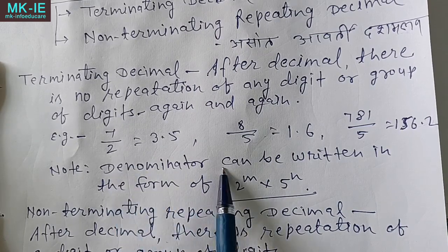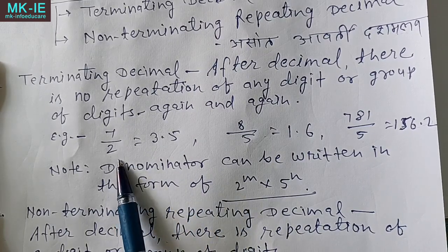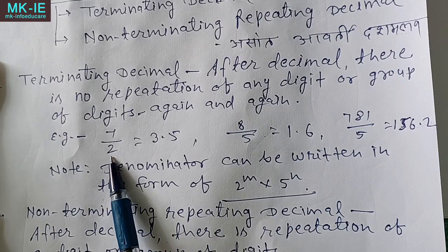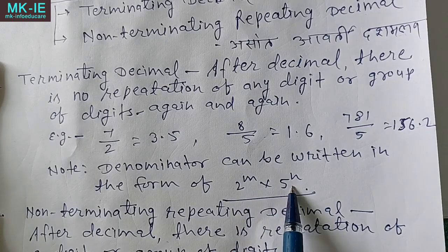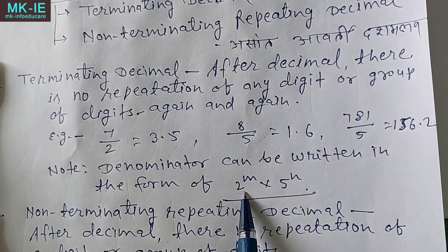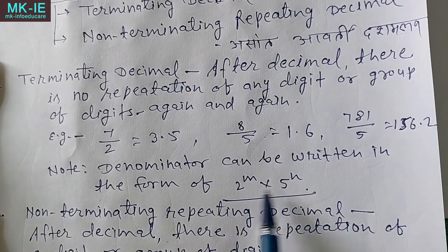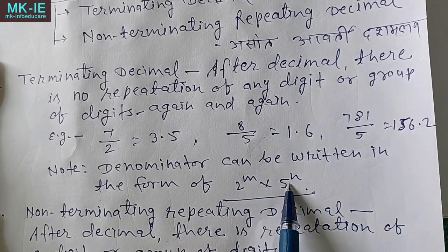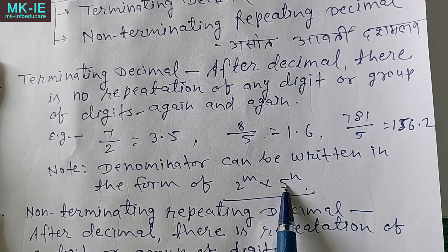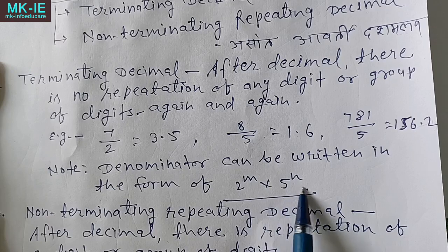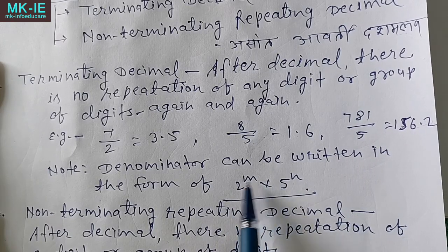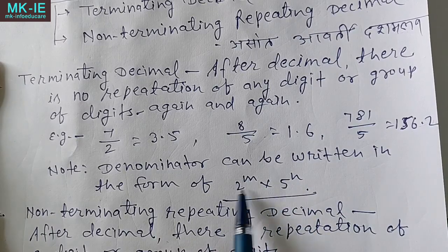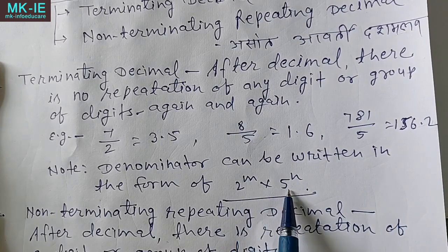Terminating decimal को identify करने का तरीका यह है: denominator का prime factorization करो। अगर denominator के prime factors में केवल 2 या 5 आते हैं — 2 और 5 को छोड़ कर कोई दूसरा prime factor नहीं आता — तो वो rational number terminating decimal में convert होगा।